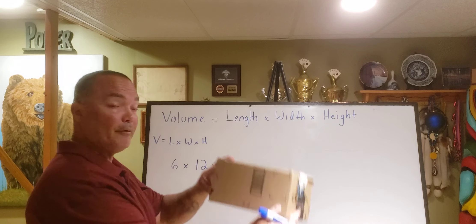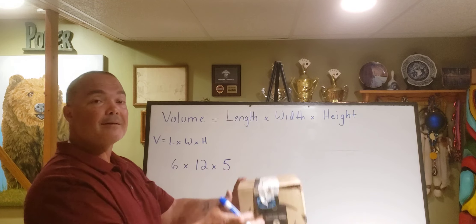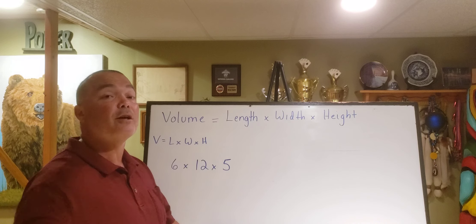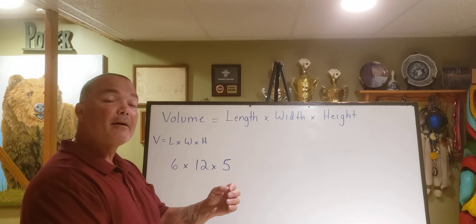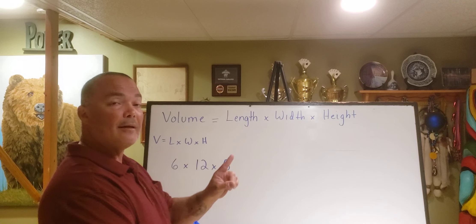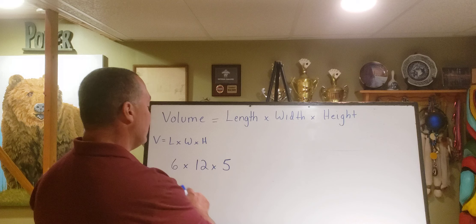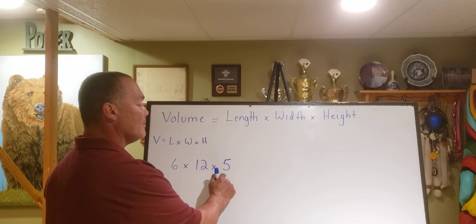So I have three dimensions. Three dimensional shape, three measurements, therefore I'm going to have that answer to be cubed. That means there'll be a small three over it, as opposed to the area, which was two, length and width, and we had it squared. So here I have six times twelve times five.